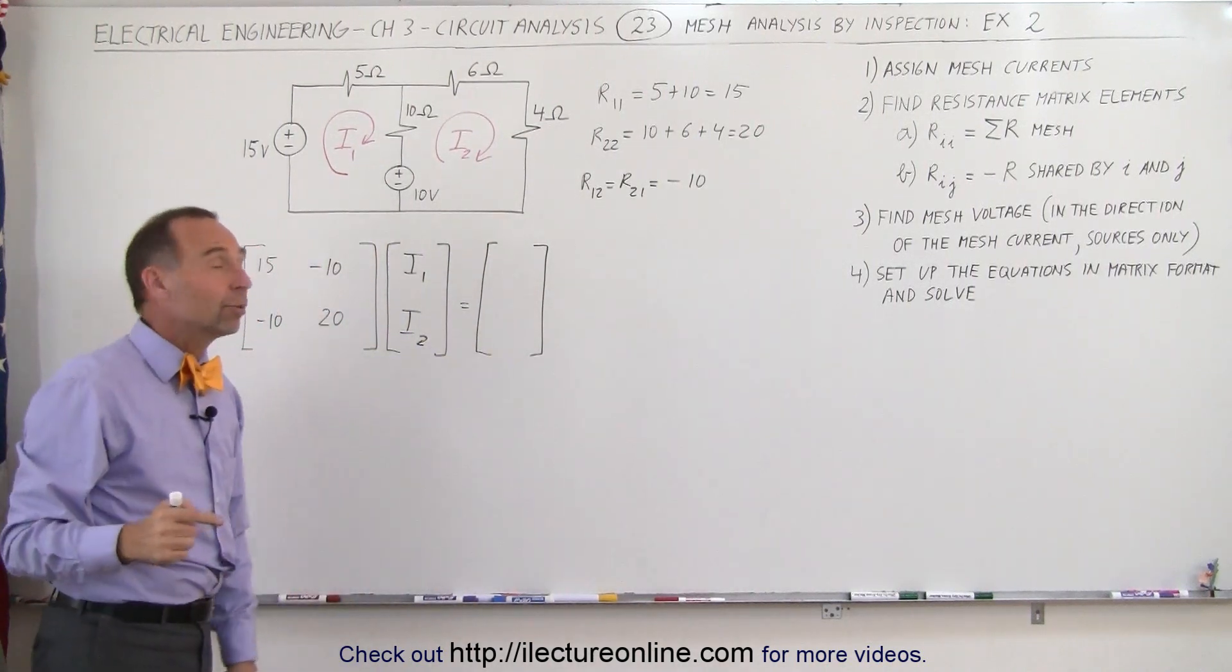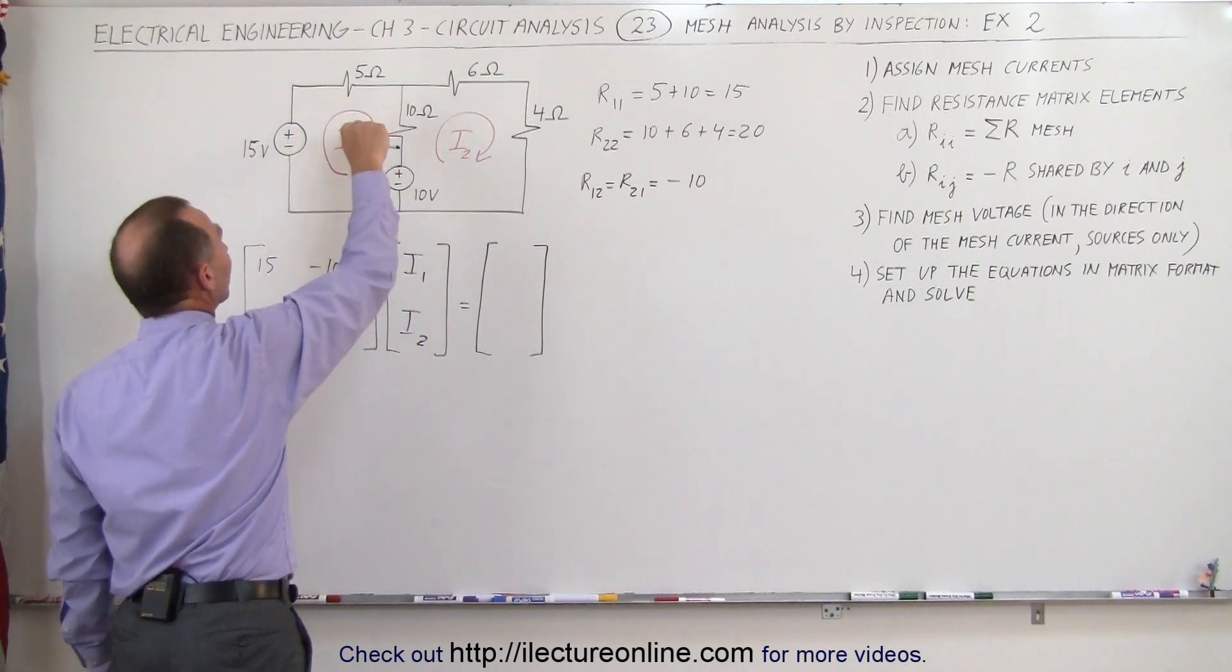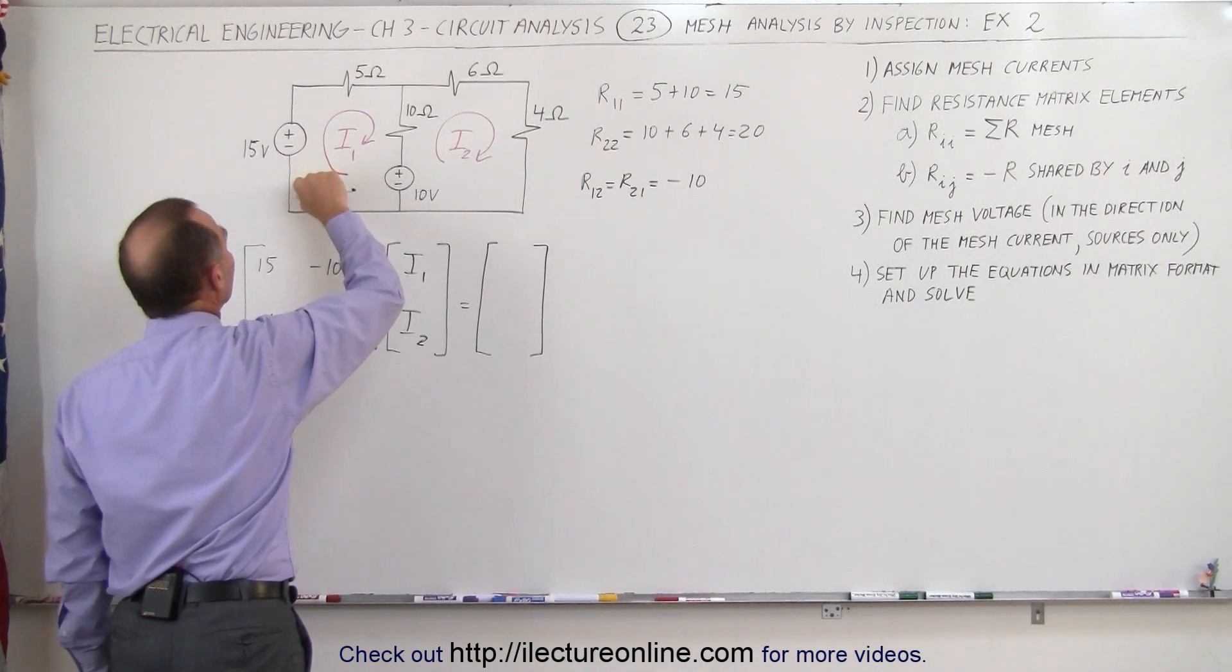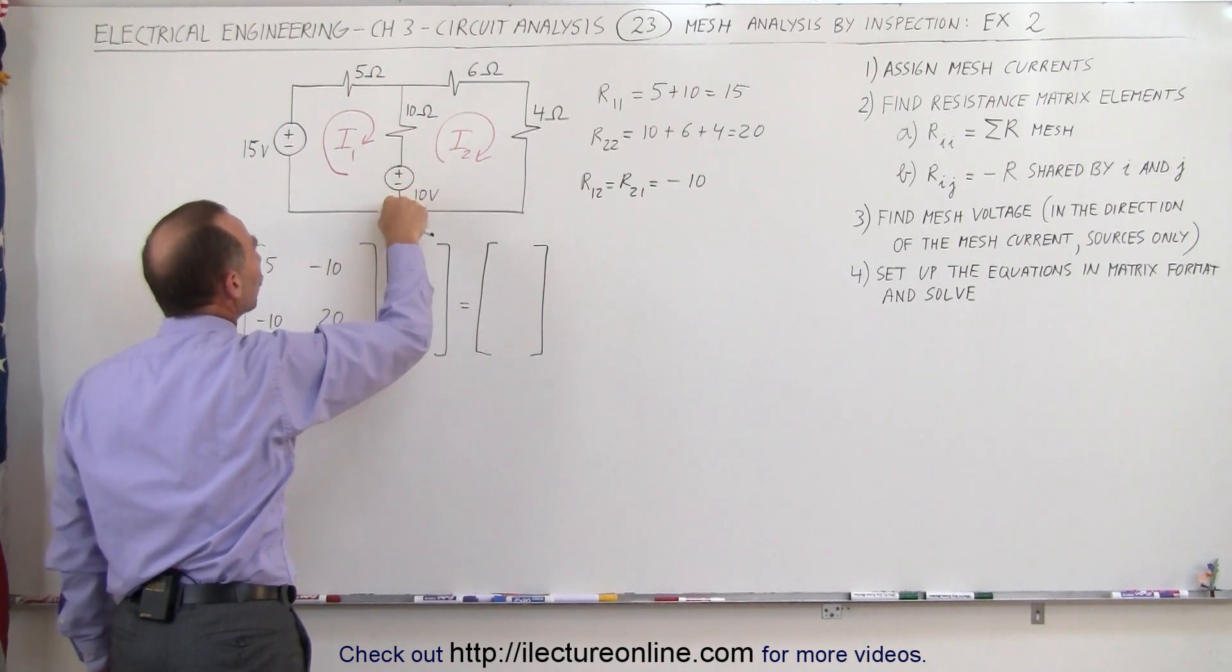Finally, we want to find the voltages as we go around each of the loops. Notice we're going to travel around the loop in the same direction as the mesh current. In this case, we have a 15 volt rise, and here we have a 10 volt drop.